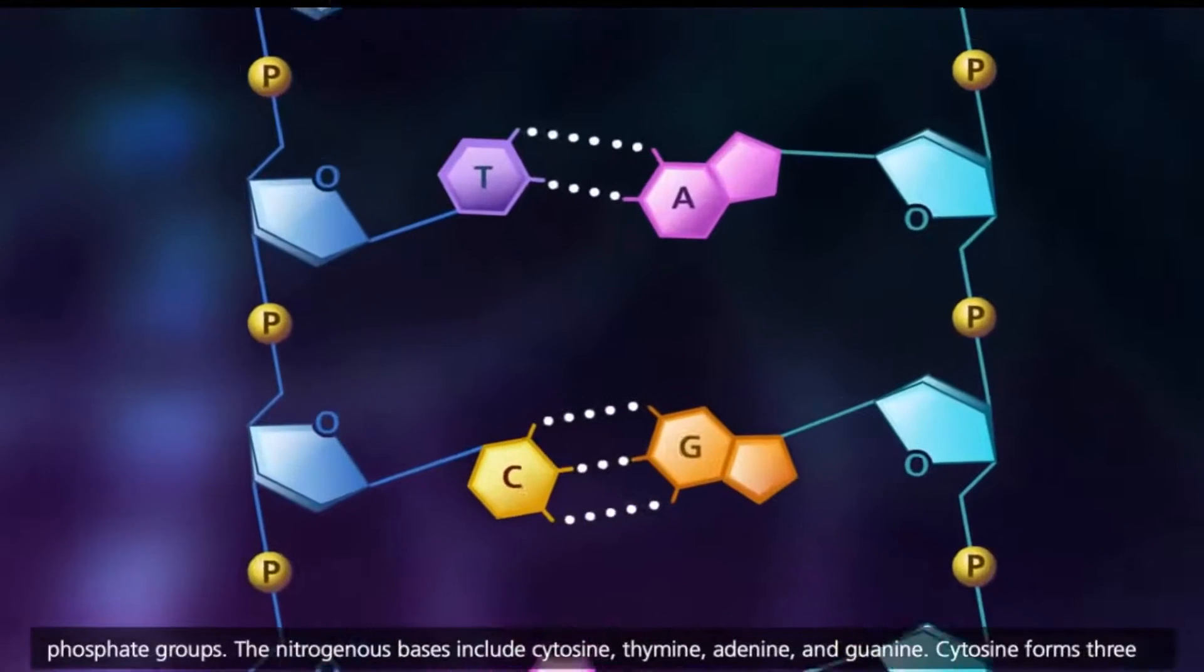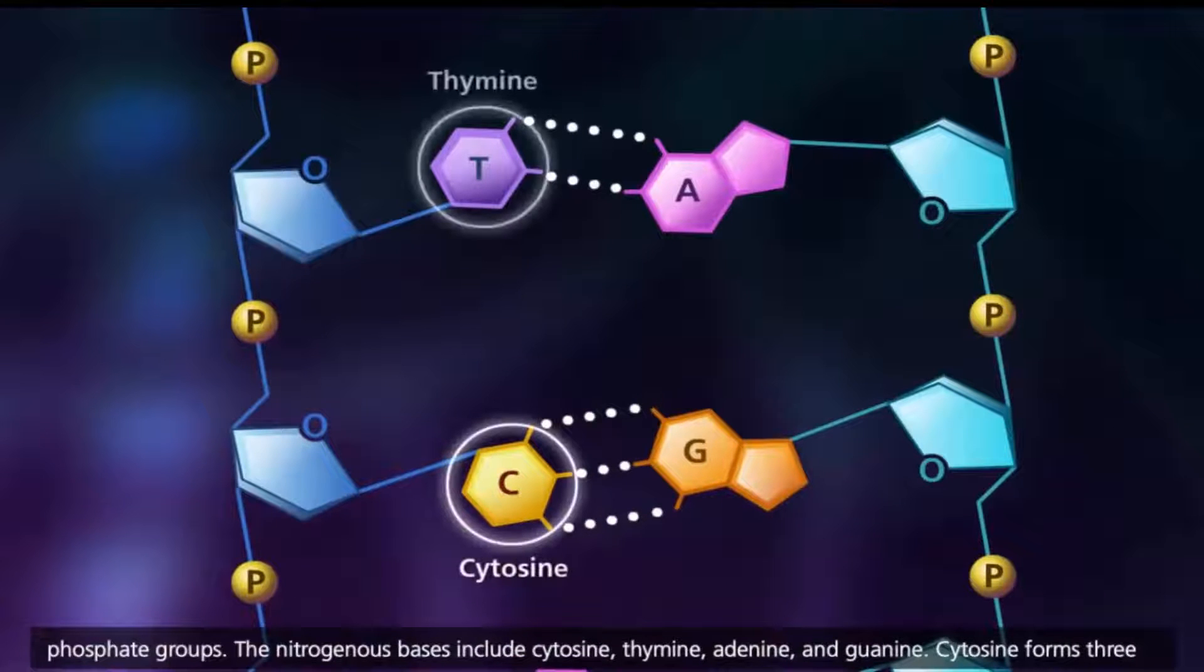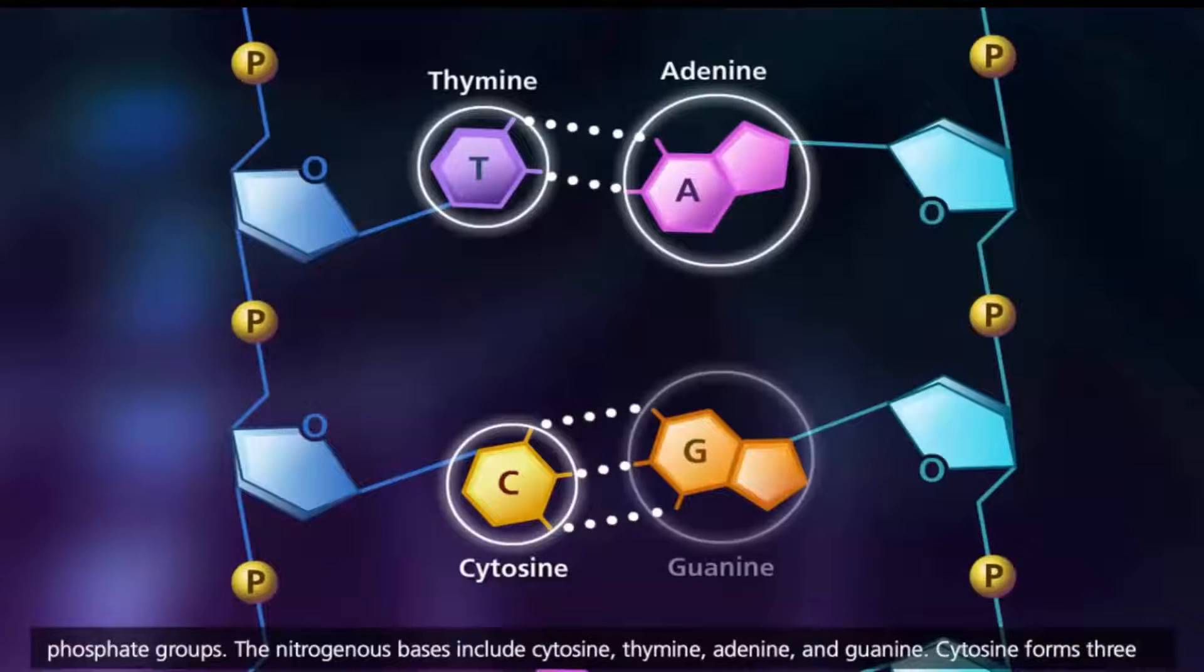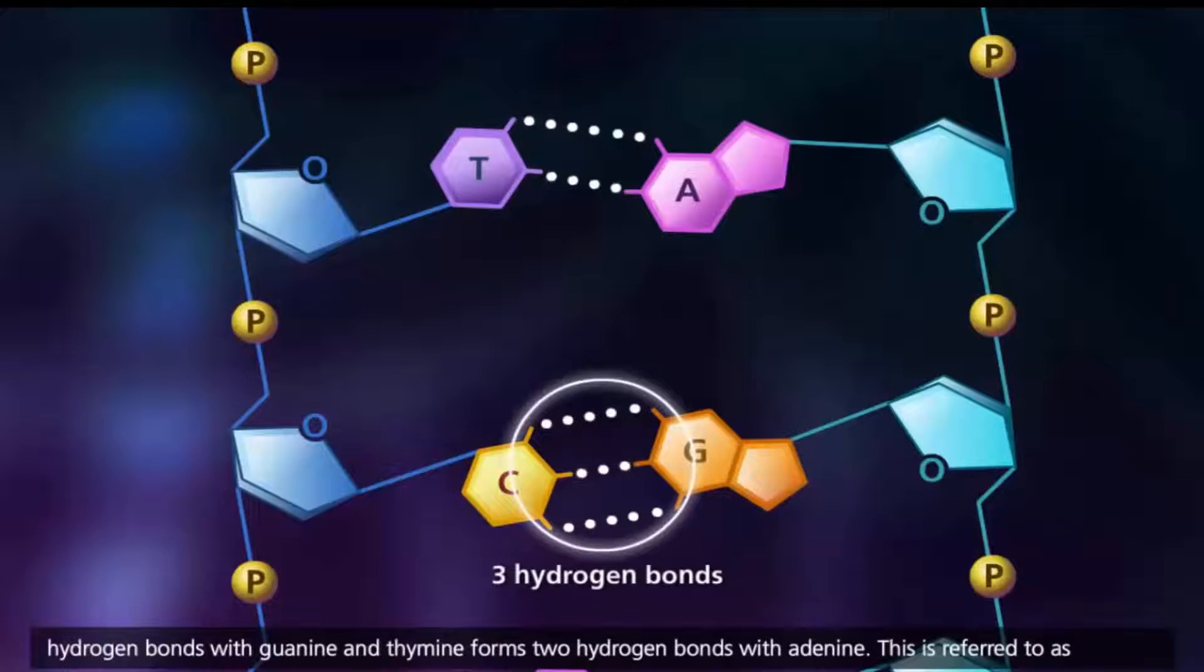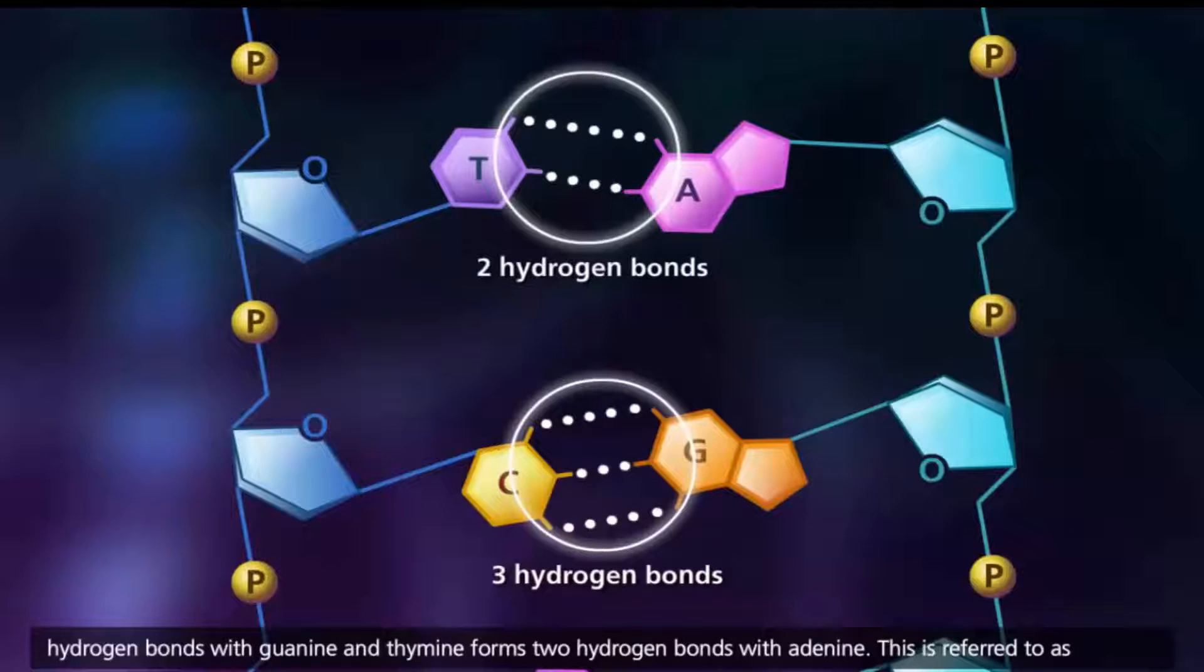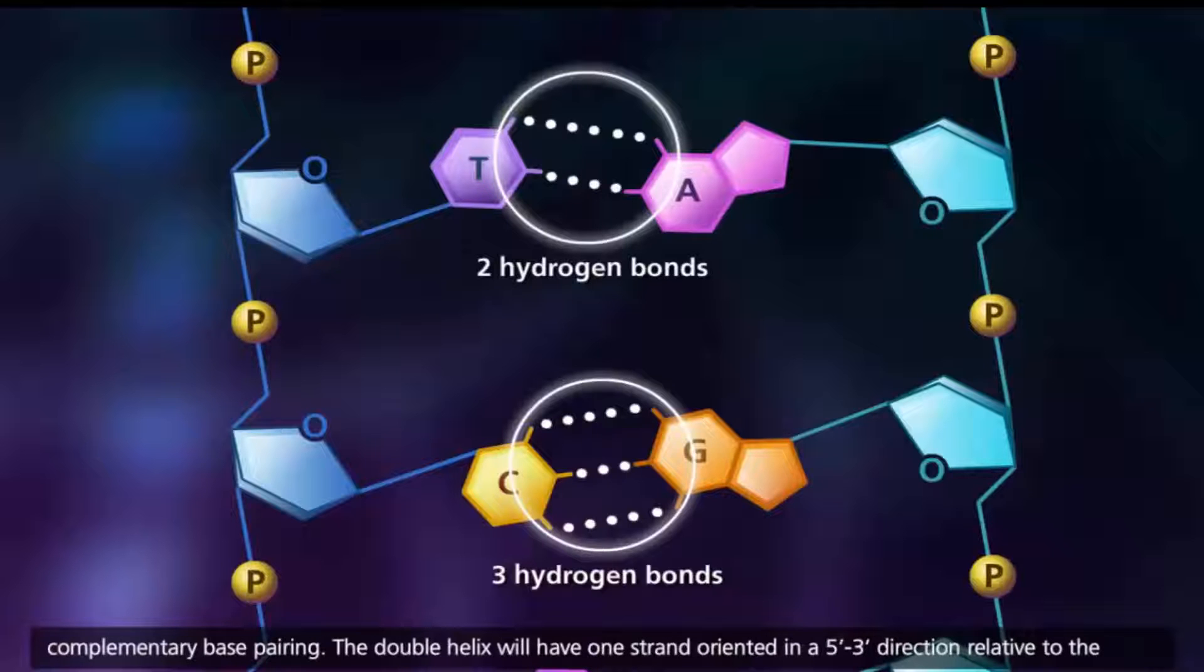The nitrogenous bases include cytosine, thymine, adenine, and guanine. Cytosine forms three hydrogen bonds with guanine, and thymine forms two hydrogen bonds with adenine. This is referred to as complementary base pairing.